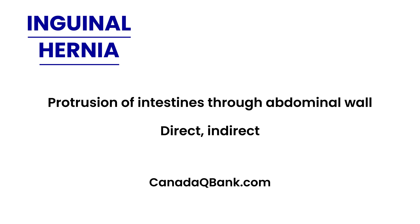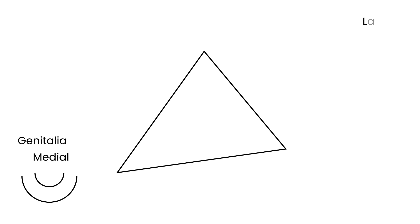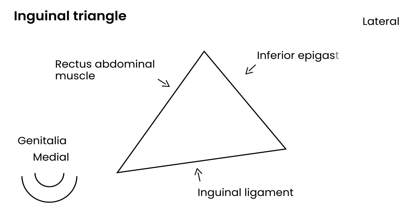To explain each type, we need to draw some anatomy. This is the area of the genitalia — this is the medial side and this is the lateral side. This is known as the inguinal triangle. This side is the rectus abdominis muscle, the bottom side is the inguinal ligament, and this side represents the inferior epigastric vessels — the artery and the vein.